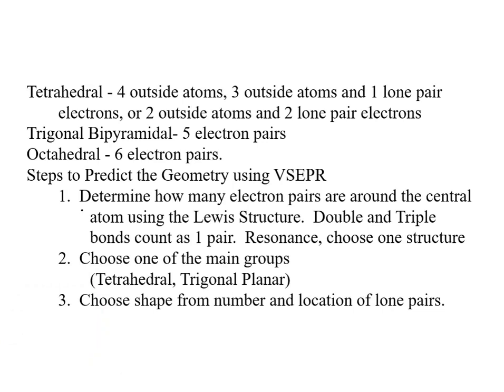To draw the Lewis dot structure, I'm going to go back to PF3. Phosphorus is in the center. Phosphorus is in group 5A, so there's five electrons times one is five. For fluorine, it's in group 7A, so there's seven times three is 21, so there's 26 total.